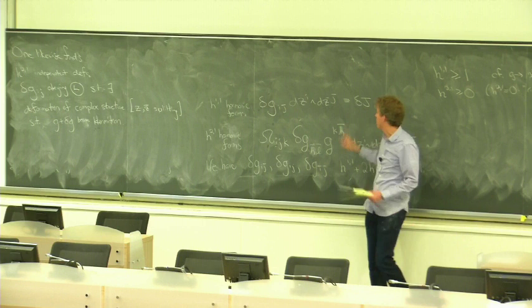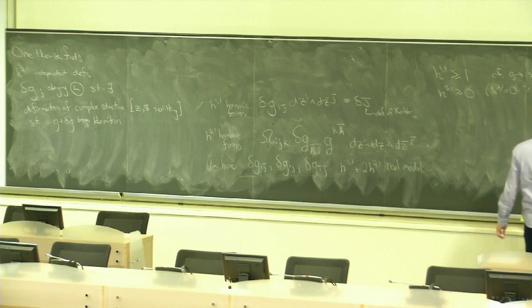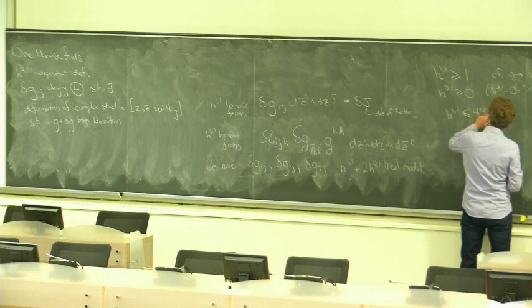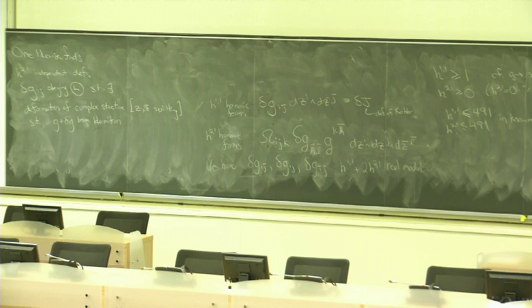There has to be at least one deformation of the Kähler form, at least one Kähler modulus, on totally general grounds. One finds H^{1,1} is less than or equal to 491, and H^{2,1} is less than or equal to 491, in known examples.